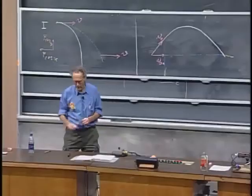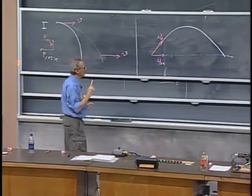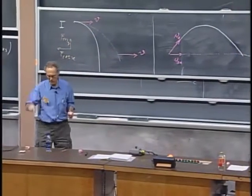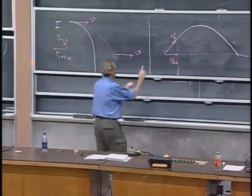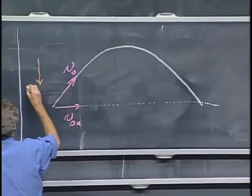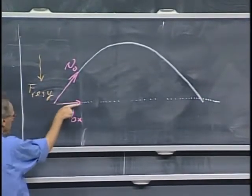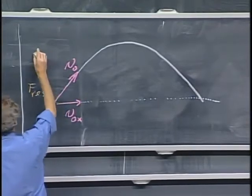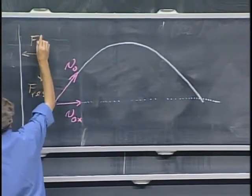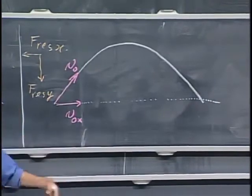But now, with air drag, you're going to see that there's going to be a force, an air drag force in the y direction. If the object goes up in this direction, then there will be a resistive force component in the y direction, and since it has a speed in this direction, there will also be a resistive force in the x direction.